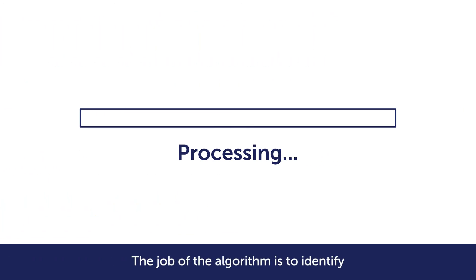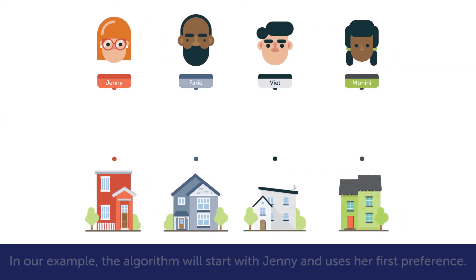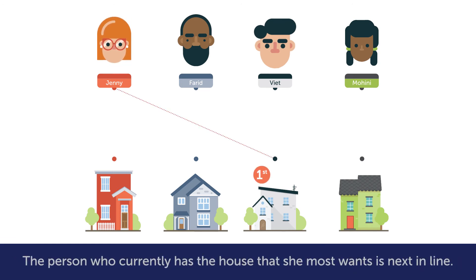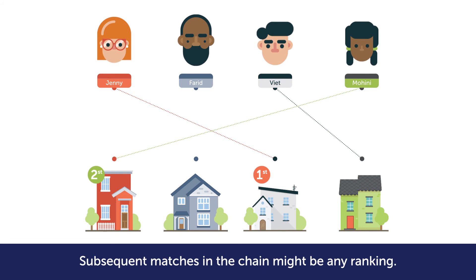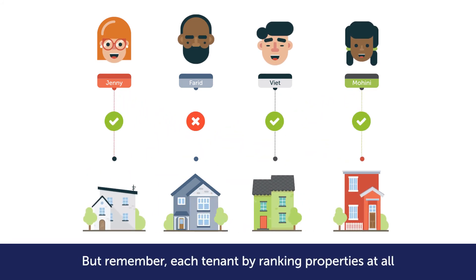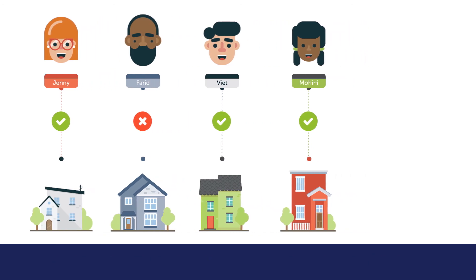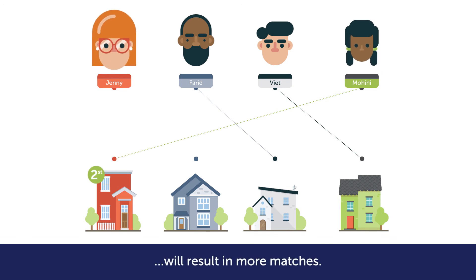The job of the algorithm is to identify the maximum number of swaps that are possible. In our example, the algorithm will start with Jenny and uses her first preference. The person who currently has the house that she most wants is next in line. Whoever's house is chosen by the second person is third in line and so on. Subsequent matches in the chain might be any ranking, but remember each tenant by ranking properties at all is saying they prefer that property to the one they currently have.